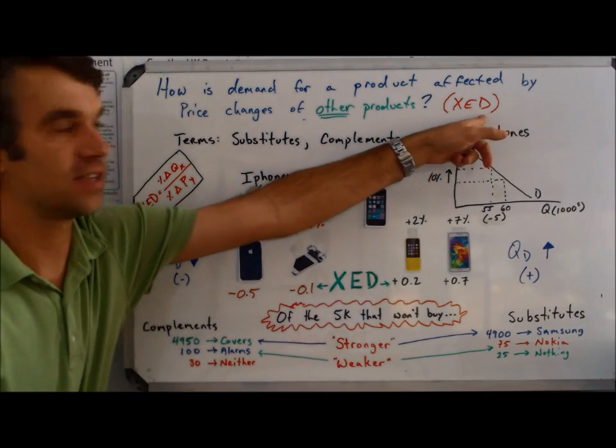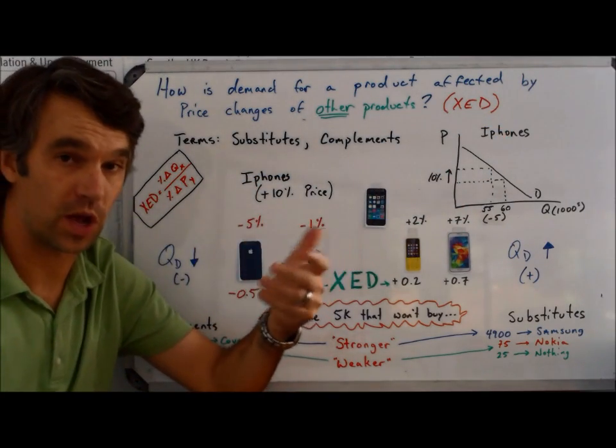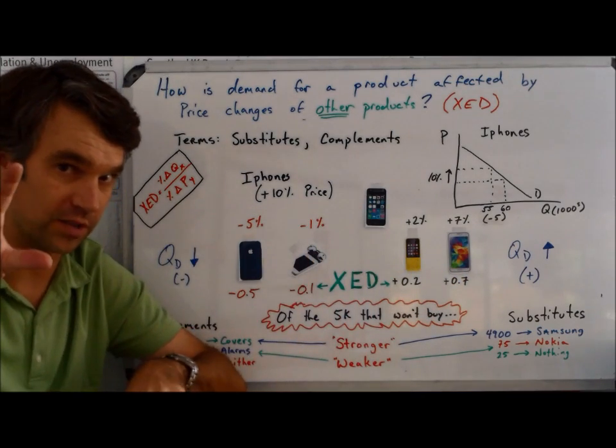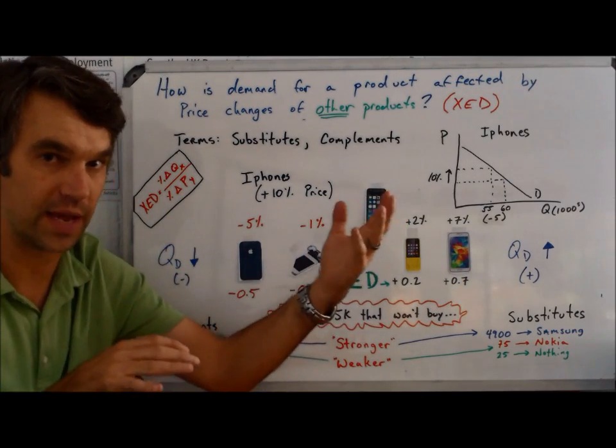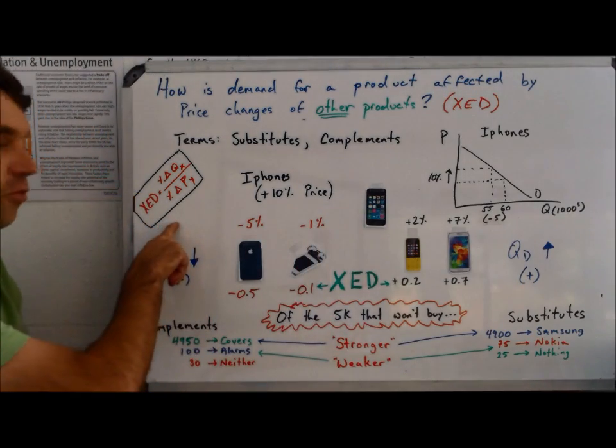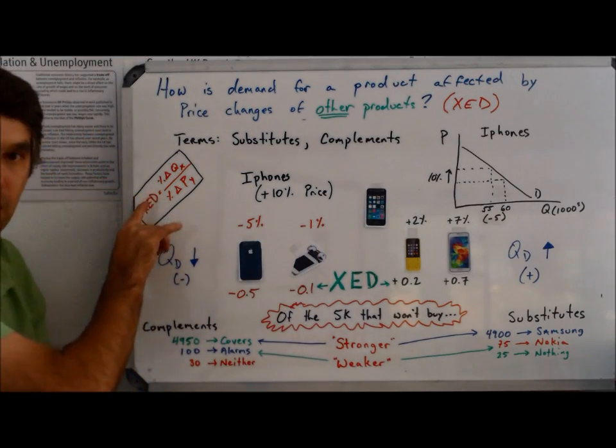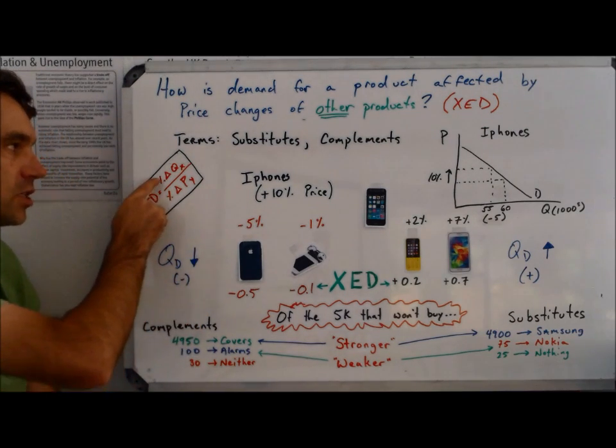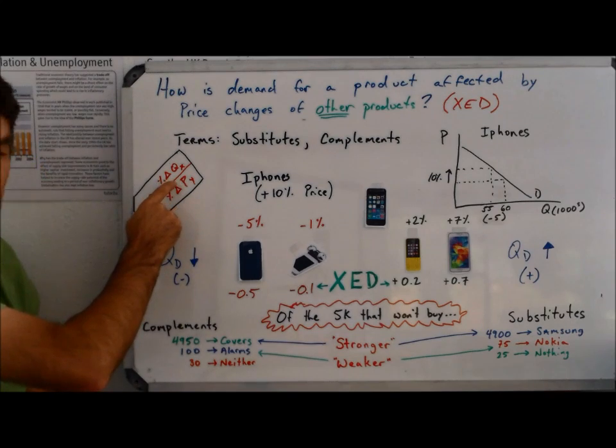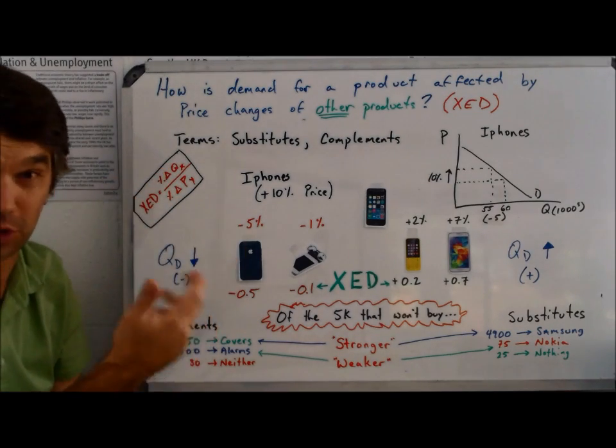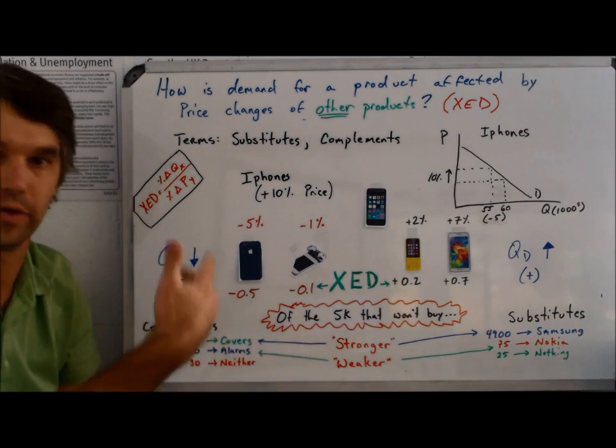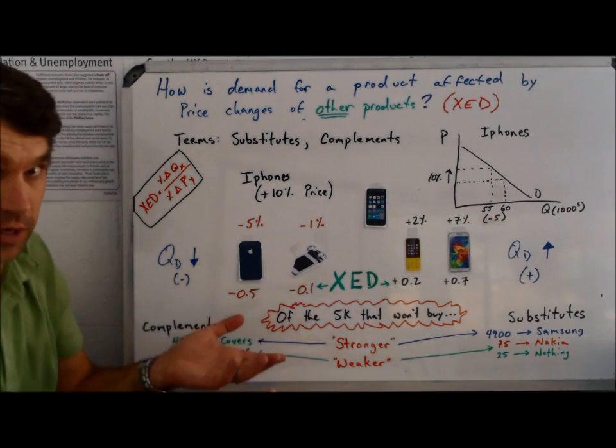So cross-elasticity of demand, also called cross-price elasticity because it's talking about the price of one good versus the quantity demanded of a different good. The formula is actually the exact same as PED, except that instead of percent change of quantity over percent change of price, it's percent change of quantity of good X divided by the percent change of price of good Y. The point is a different good.